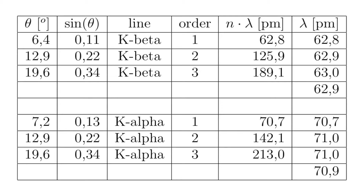For the same crystal, we now look at the k-alpha line. At theta equal to 7.2 degrees, sinus theta is 0.12 and the k-alpha line in the first order gives lambda equal to 70.7 picometers. For theta equal to 12.9 degrees, sinus theta is 0.22 and the k-alpha line in the second order gives n times lambda equal to 142.1 picometers, so lambda is 71.0 picometers. For theta equal to 19.6 degrees, sinus theta is 0.34, and the k-alpha line in the third order gives n times lambda equal to 213.0 picometers and lambda equal to 71.0 picometers. The average value for the wavelength is 70.9 picometers.